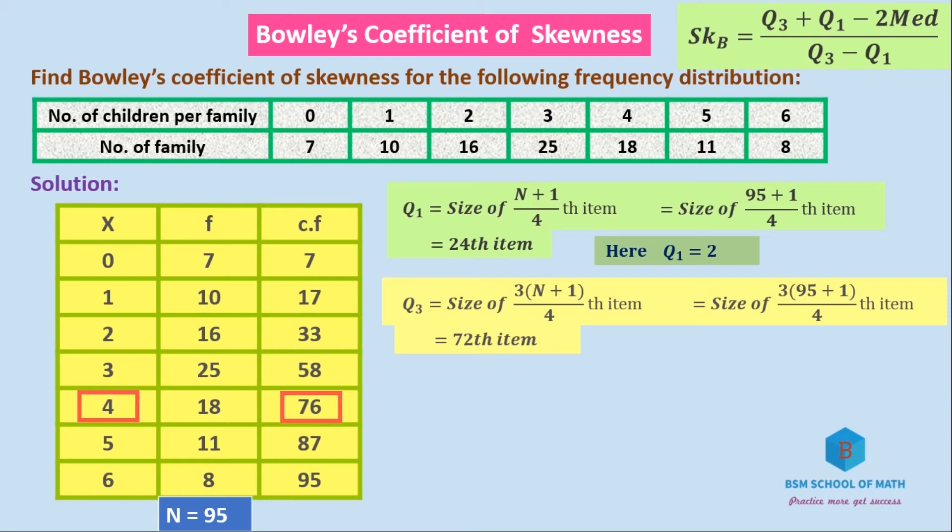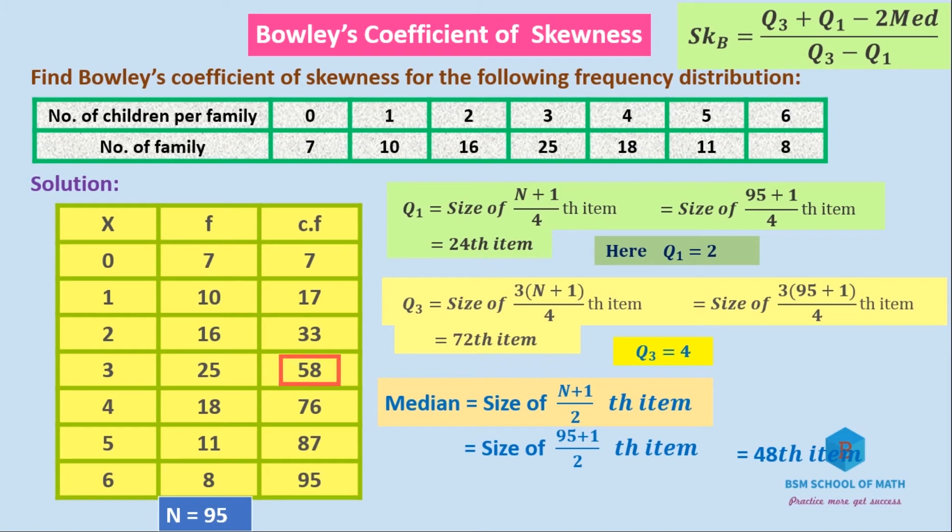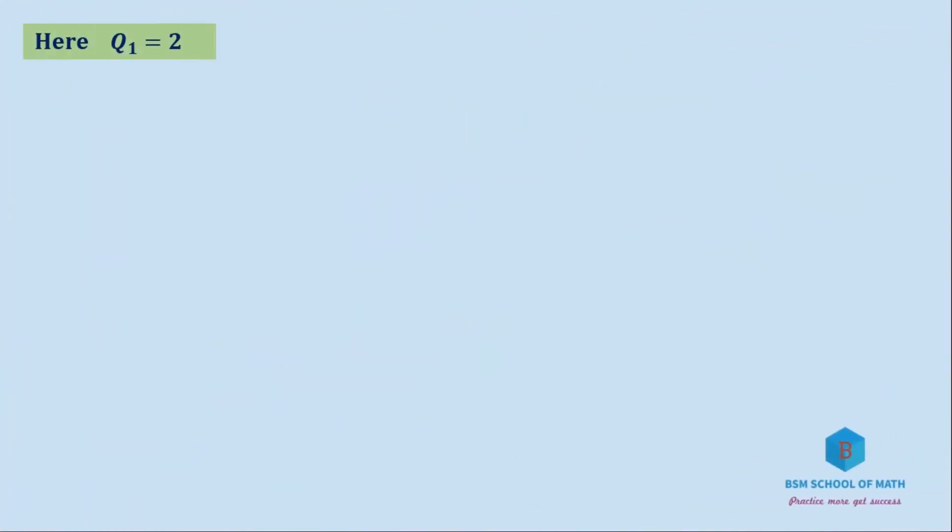Median is the size of (N+1)/2 th item. So (95+1)/2 equals 96/2 which is the 48th item. The 48th item or above is 58, corresponding to value 3. So median equals 3. Therefore Q1 = 2, Q3 = 4, and median = 3. SK_B = (Q3 + Q1 - 2*Median)/(Q3 - Q1).